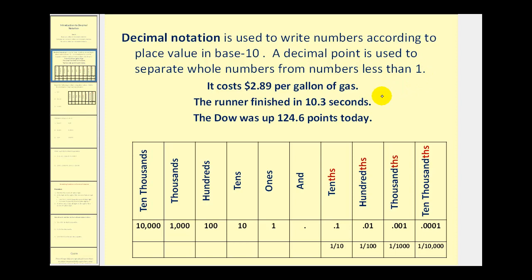And we see decimals all the time in our real life. For example, if it costs $2.89 per gallon of gas, the two represents two whole dollars, and the 89 to the right of the decimal point represents 89 hundredths of one dollar. If the runner finished the race in 10.3 seconds, that means it took the runner 10 whole seconds and 3 tenths of a second to finish.